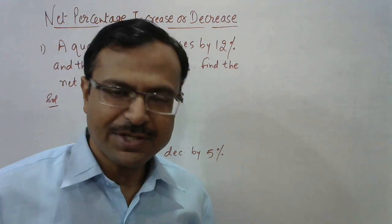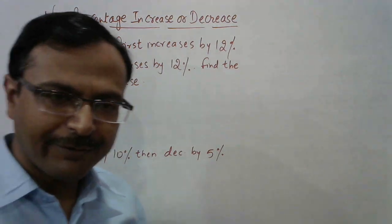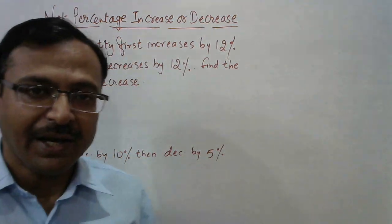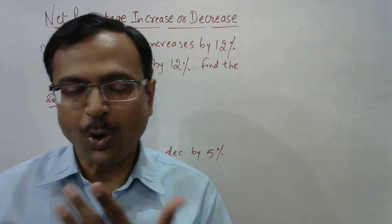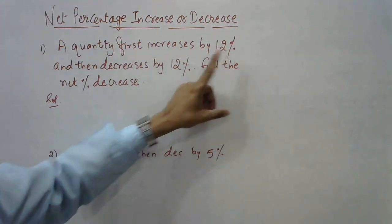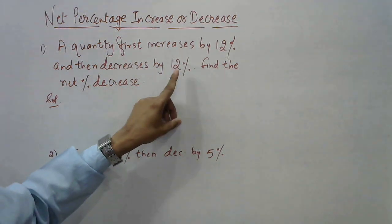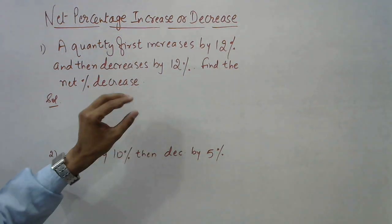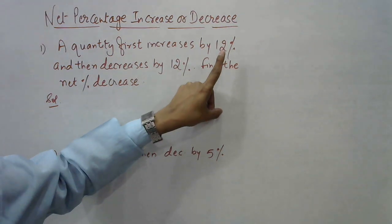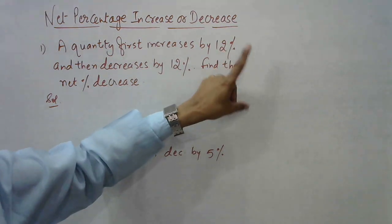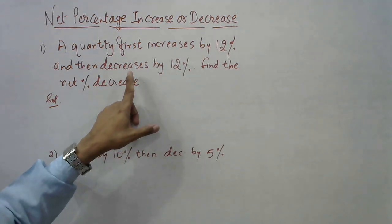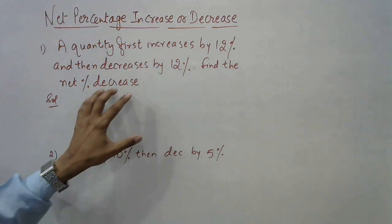In this video I'll take up an important concept of percentage, very often asked in competitive exams: how to find the net percentage increase or decrease when a quantity first increases by a particular percentage and then decreases by the same percentage. There will always be a net percentage decrease — because the decrease is applied to a larger quantity, so the decrease amount is greater than the increase.